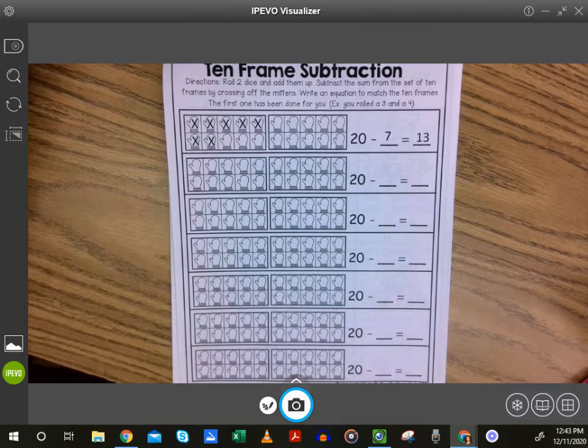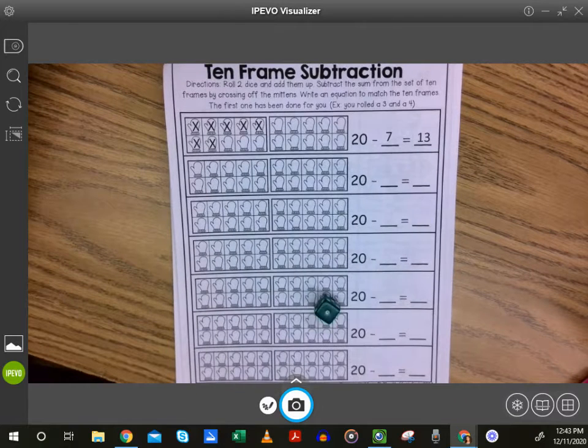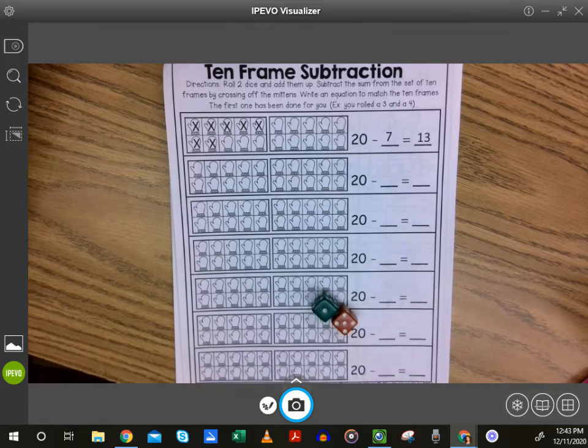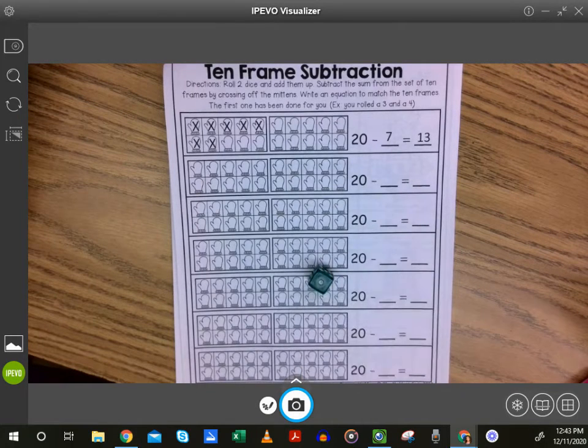Okay, today we are doing ten frame subtraction. And for this one, you're also going to want to have a dice. It says two dice, but if you have at least one die, you are going to be good. So let me show you some different options you can do here.